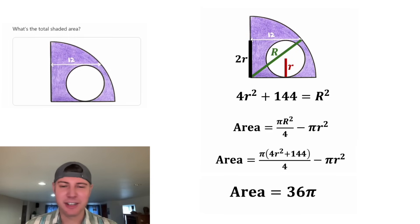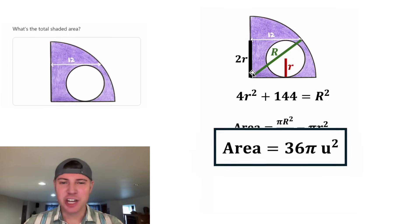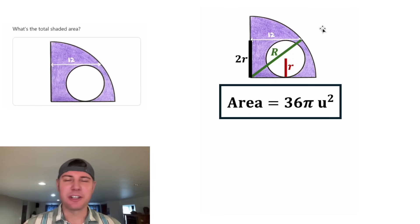And this is the answer to our question. Let's give it a label of units squared and put a box around it. The shaded area of this figure is equal to 36π units squared. How exciting.